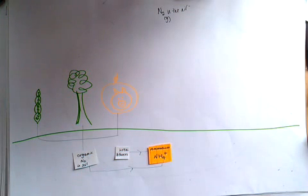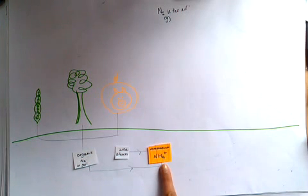The next thing that happens in the nitrogen cycle is that this ammonium needs to be broken down to nitrates. Ammonium and nitrates can both be used by plants for producing proteins and amino acids, for growth. The ammonium needs to be converted to nitrates because some plants can only use nitrates.